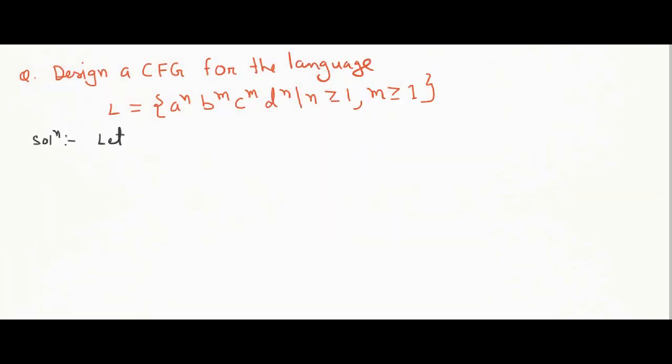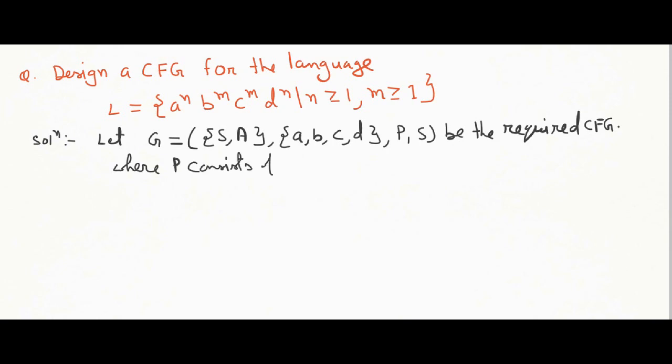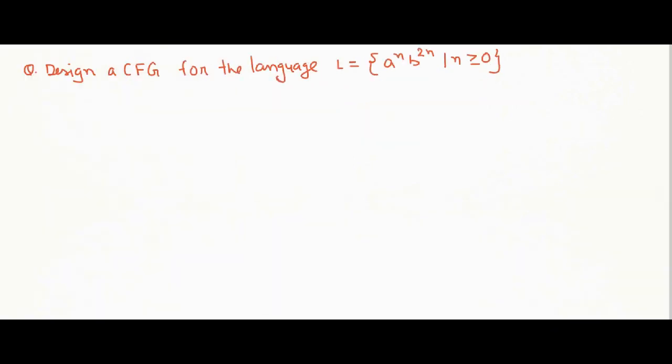Next. A to the n, B to the m, C to the m, D to the m. N and M greater than equal to 1. We are going to use two variables. Production rules are given below. So this grammar is going to generate the desired language.